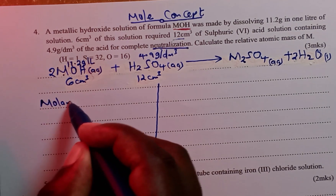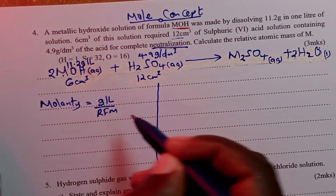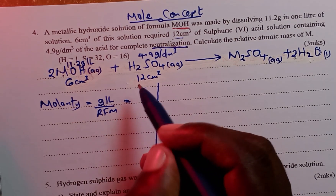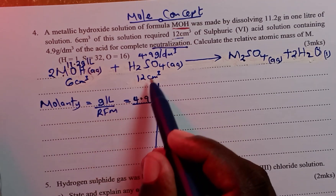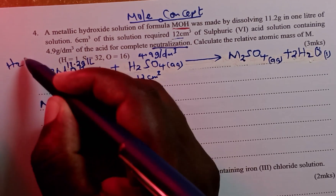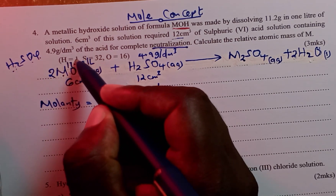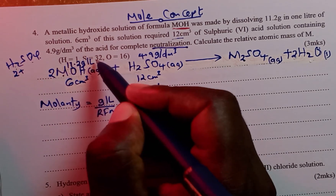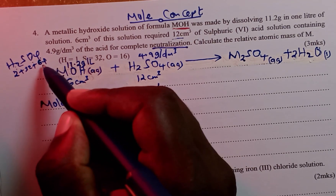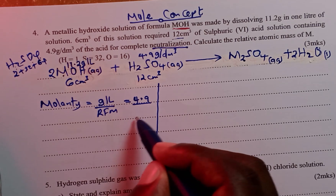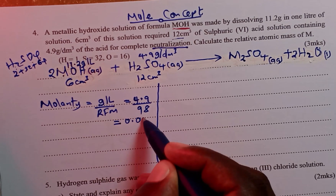Molarity is given by grams per liter divided by the relative formula mass of the acid. Grams per liter of the acid is 4.9. To get the relative formula mass of sulfuric acid, we sum up all the relative atomic masses: hydrogen is 1 × 2 = 2, sulfur is 32, and oxygen is 16 × 4 = 64. Adding all of these gives us 98. So 4.9 divided by 98 gives us a molarity of 0.05 molar.